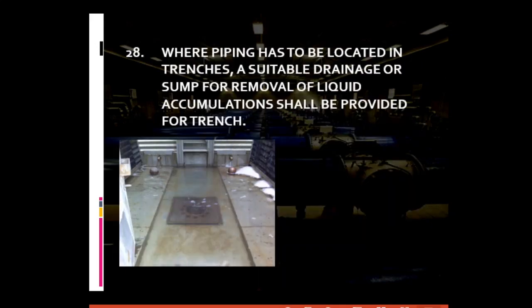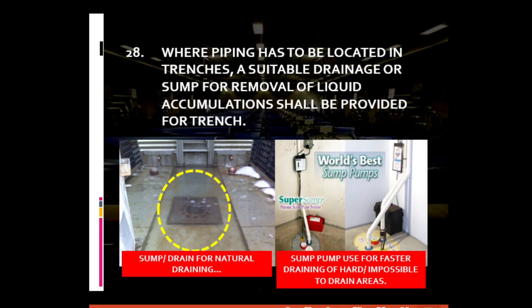For general piping requirement number twenty-eight: where piping has to be located in trenches, a suitable drainage or sump for the removal of liquid accumulation should be provided for the trench. Aside from steel branches, such trenches should also be provided with drains to prevent the piping line from being submerged, allowing easier monitoring and possible repairs. When natural drainage can no longer handle the accumulation of liquid, a sump pump is used.